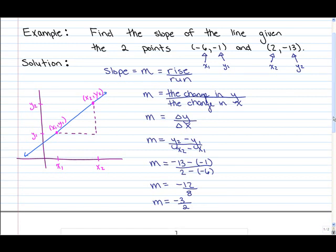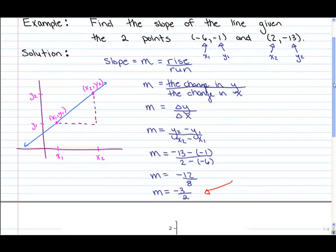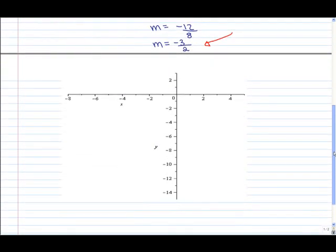Our slope here, negative 3 over 2, represents a decreasing function, so a negative slope. Let's quickly show what this means. Our points here were negative 6, negative 1 and positive 2, negative 13. Let's plot those two points on this axis below. Our first point was when x is equal to negative 6, y is equal to negative 1. Now if we connect these two dots, that represents our straight line. As you can see, our line here is a decreasing function and our slope is therefore negative.